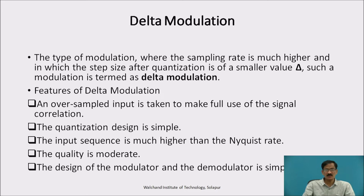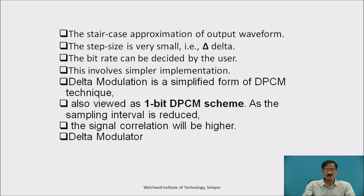Features of delta modulation: an oversampled input is taken to make full use of signal correlation. The quantization design is simple. The input sequence is much higher than the Nyquist rate. The quality is moderate. The design of the modulator and demodulator is simple. The output waveform is a staircase approximation. The step size is very small — that is delta.